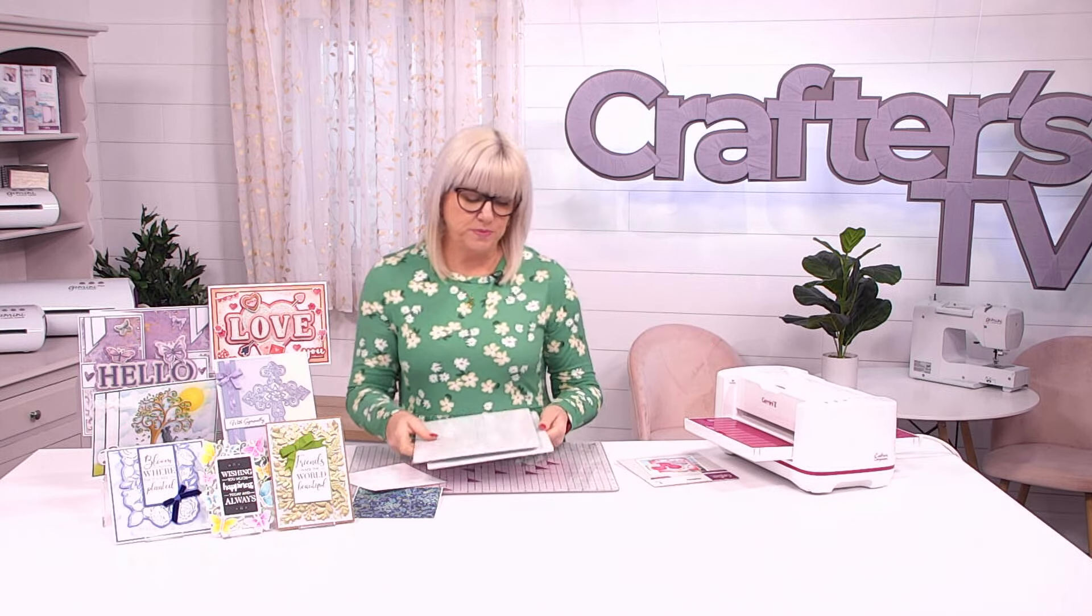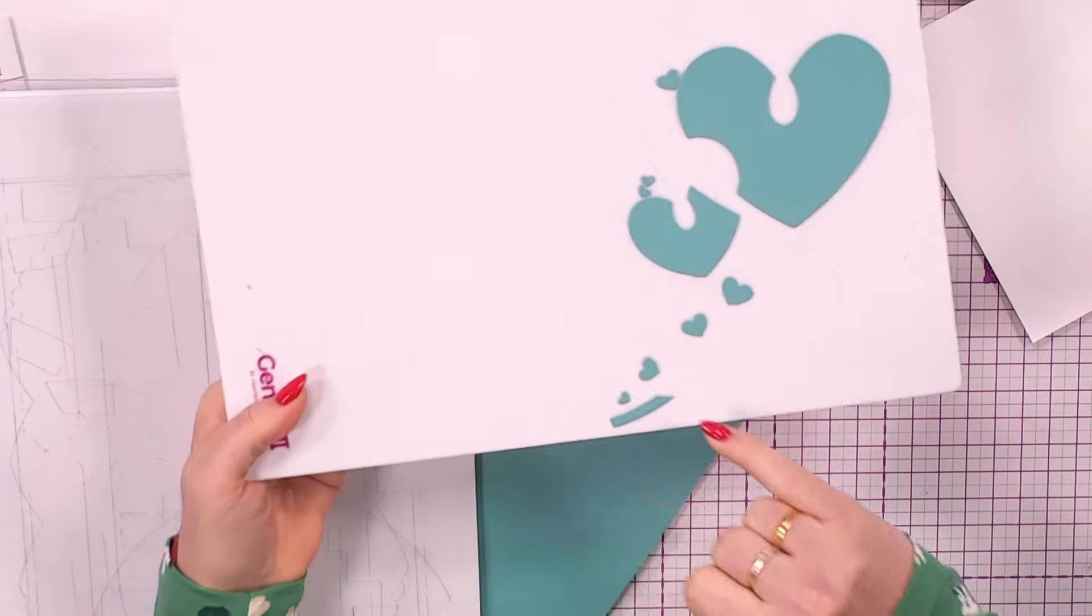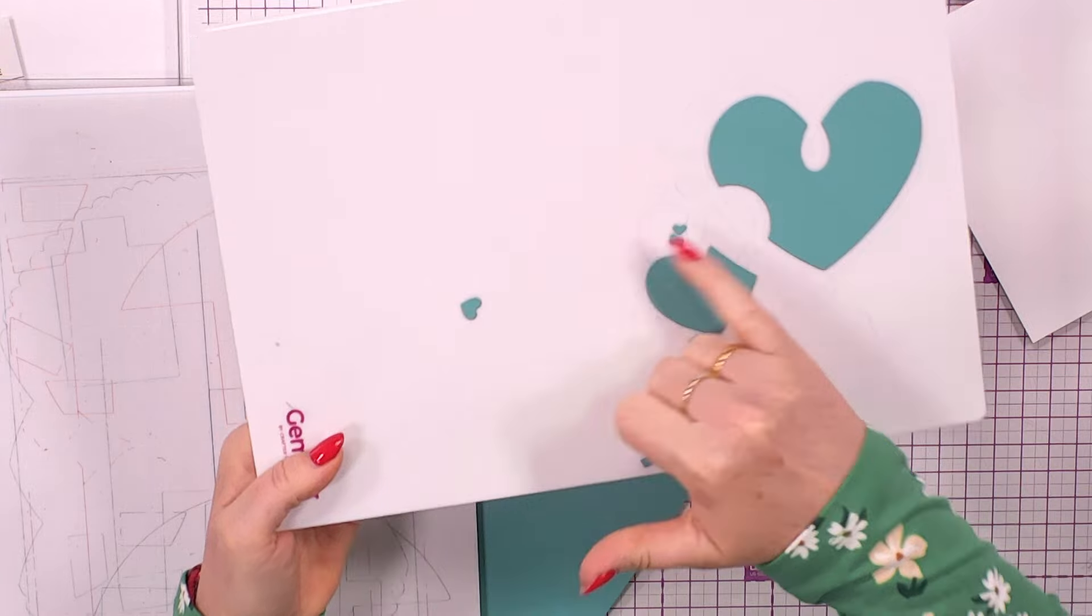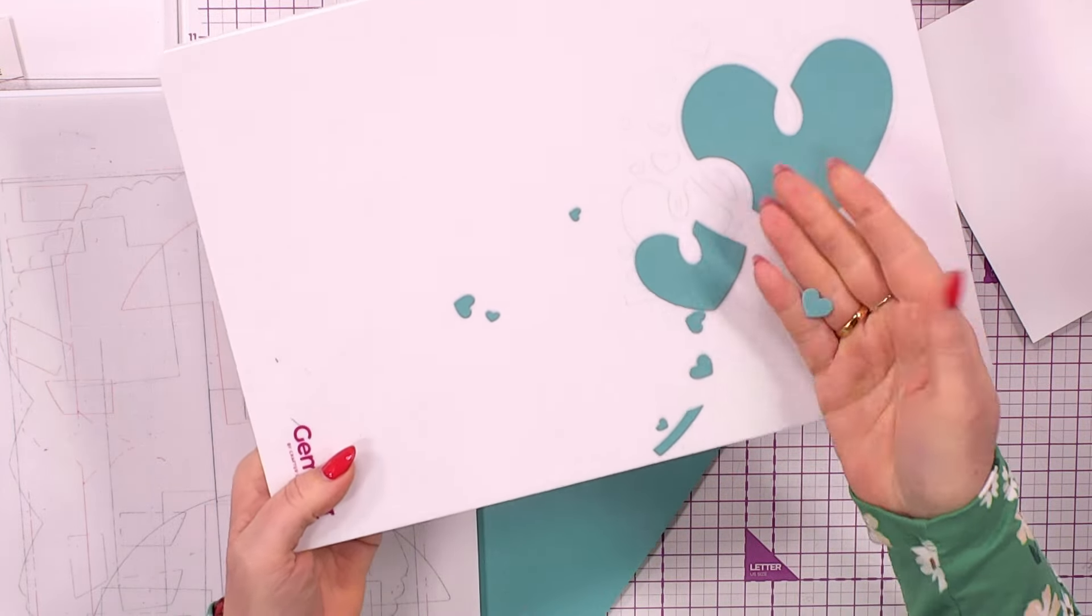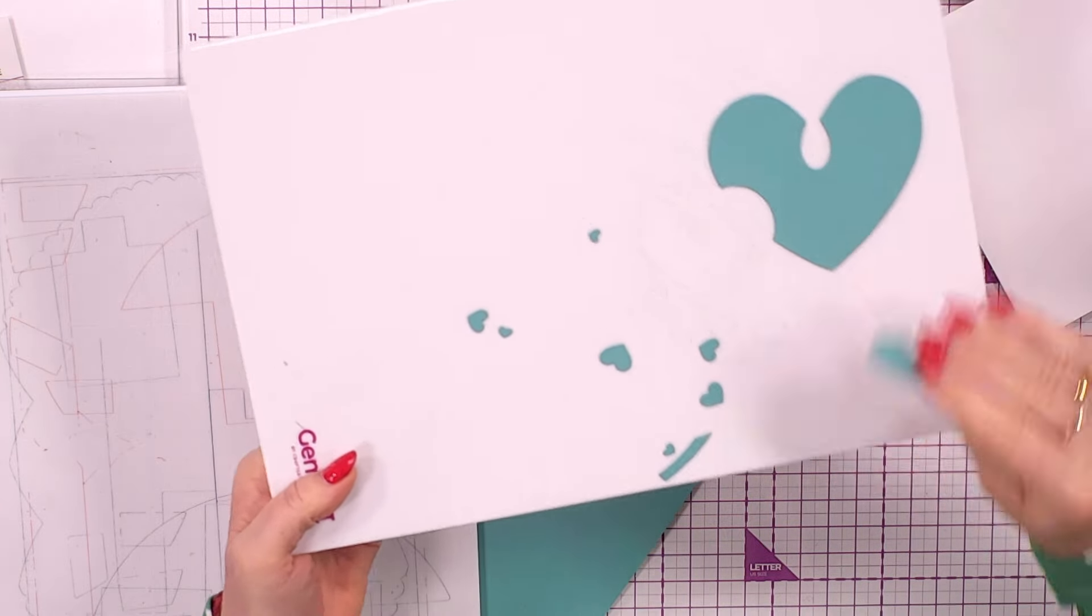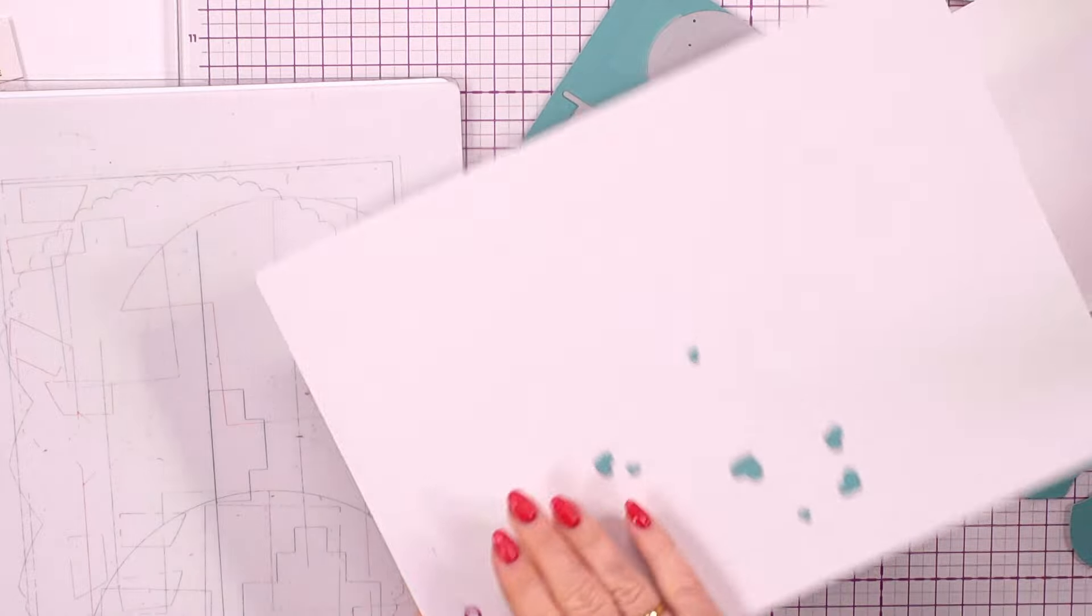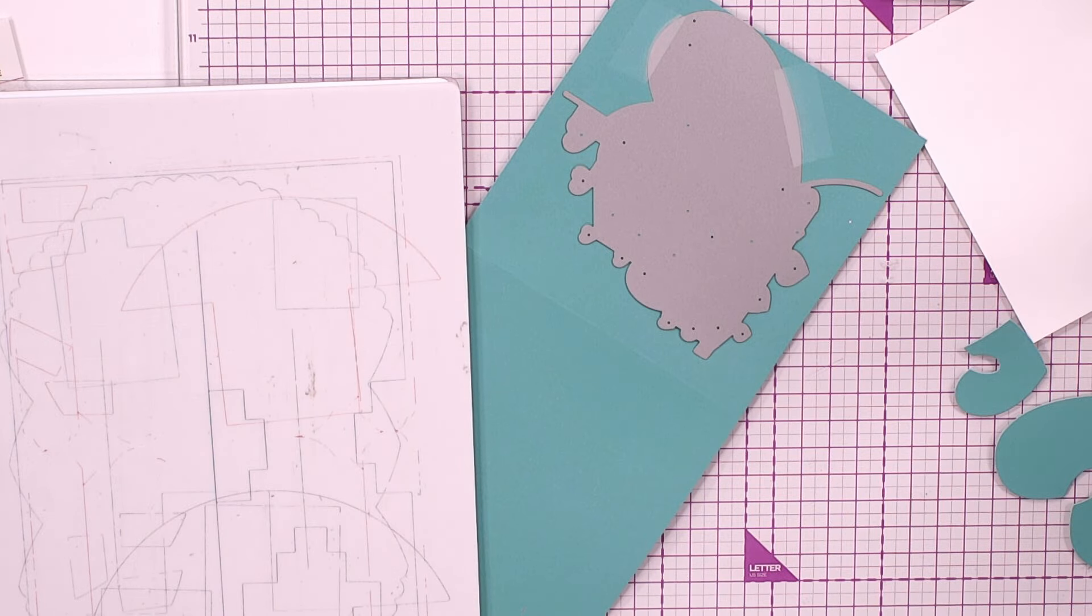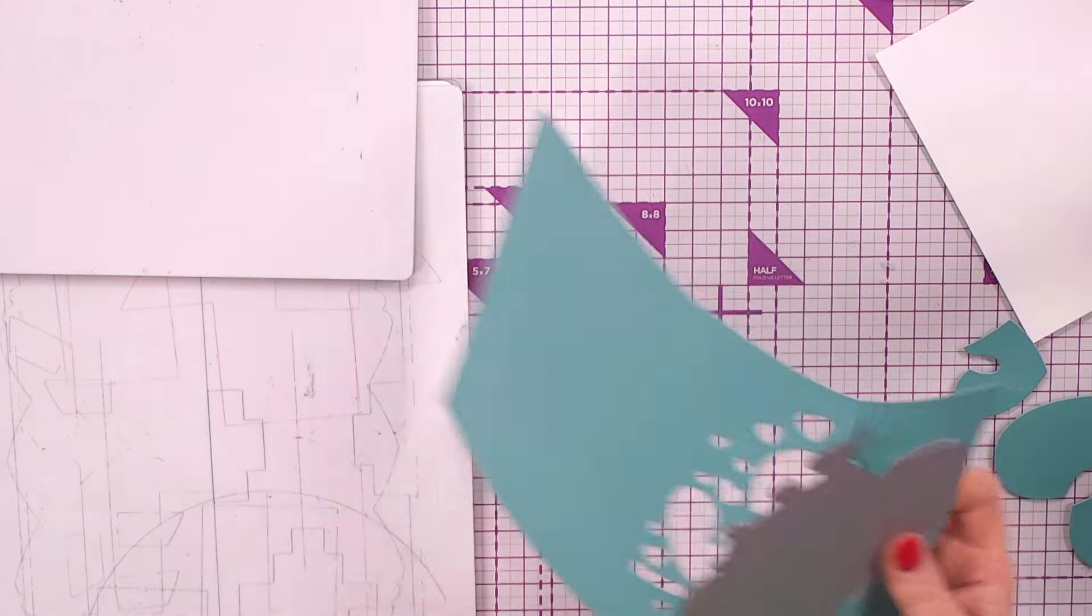Let's take those out. You can see here you've got all these additional little hearts, so I would keep those, especially when cutting out of double-sided papers, because you've then got your shaker elements if you wanted to make a shaker card. I'm going to keep them for later.